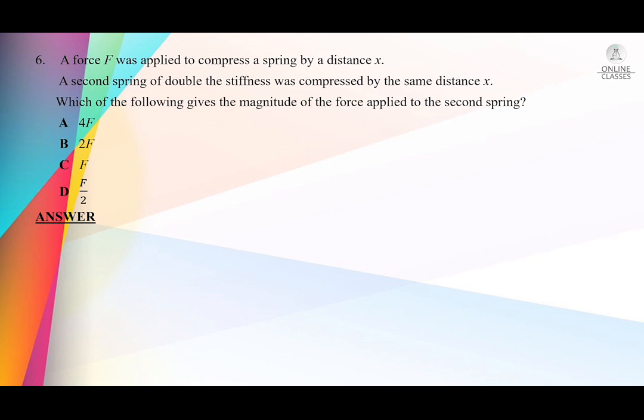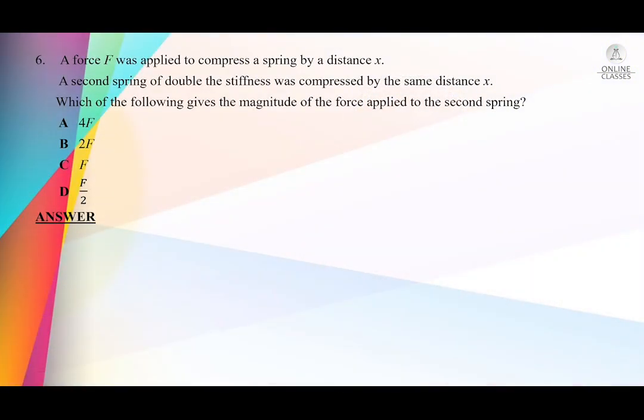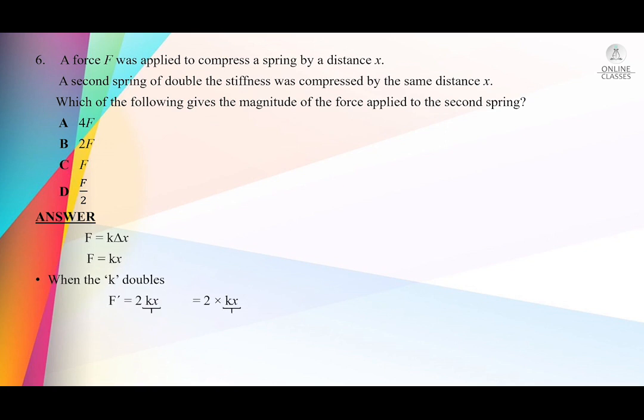The first spring has force F applied and compression distance x. The second spring has double the stiffness but the same compression distance x. We need to find which force is needed to compress by the same distance. We use Hooke's law: F = kΔx. Since they give the compression as x, it becomes F = kx.